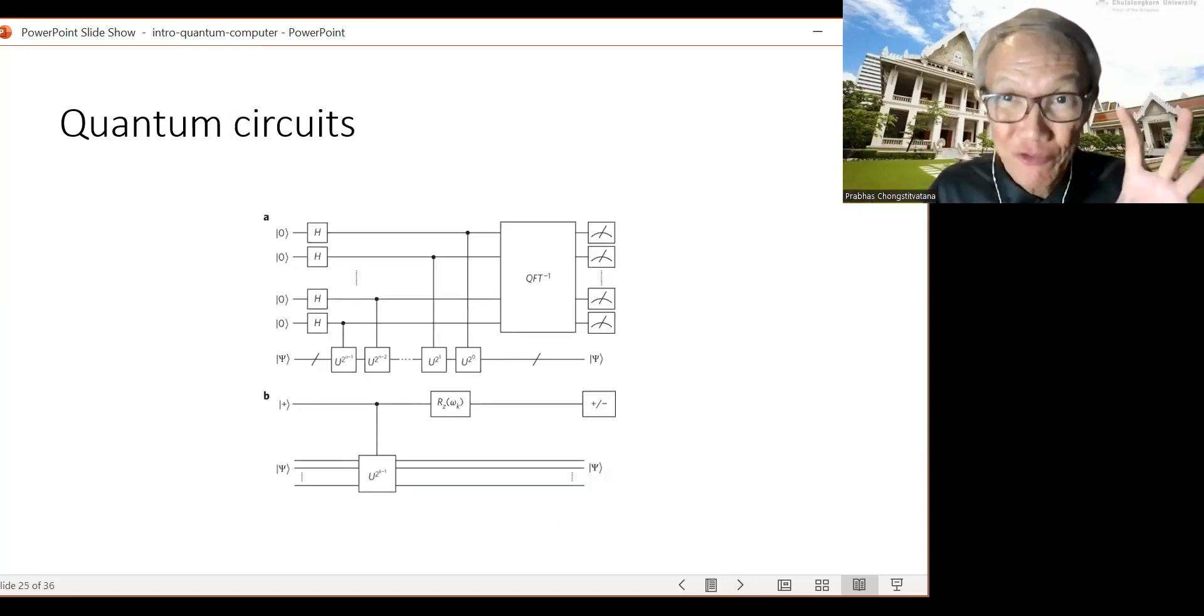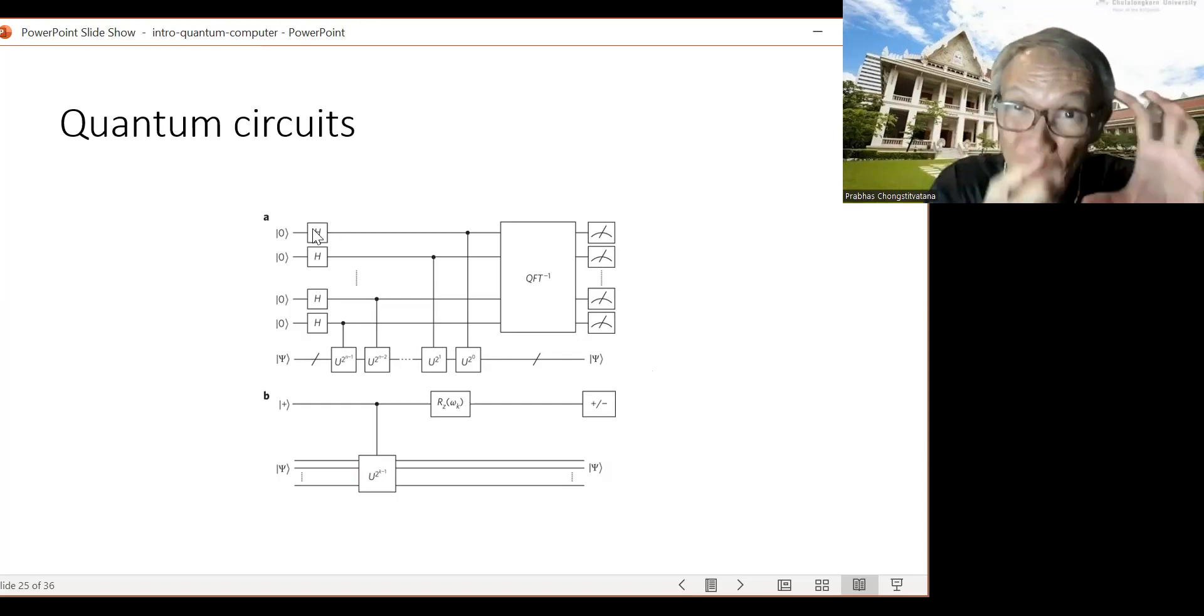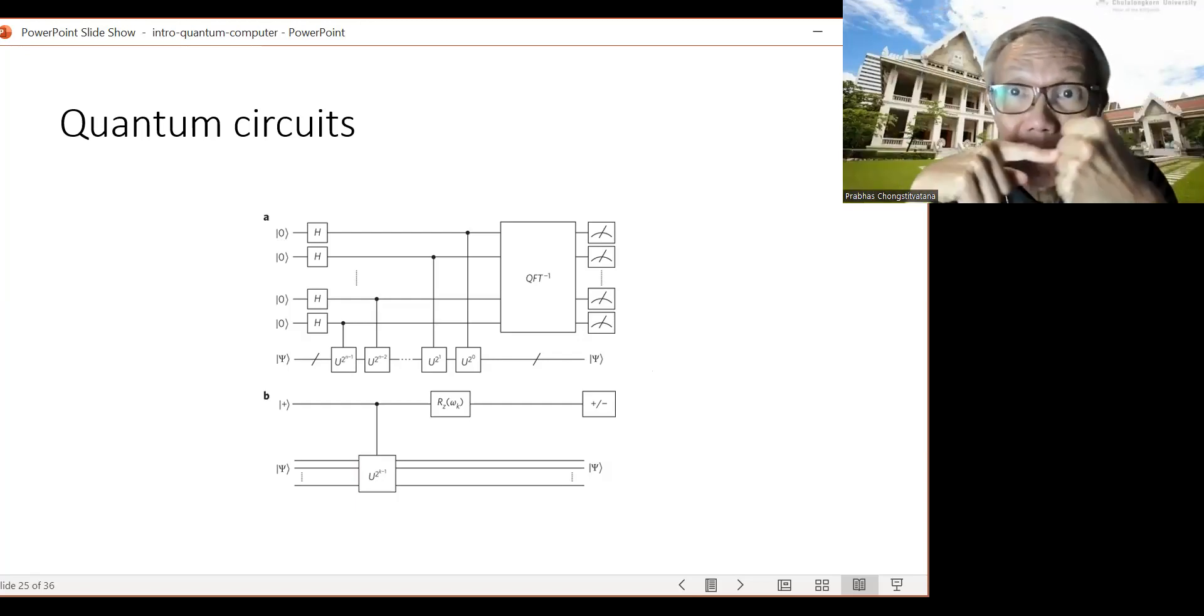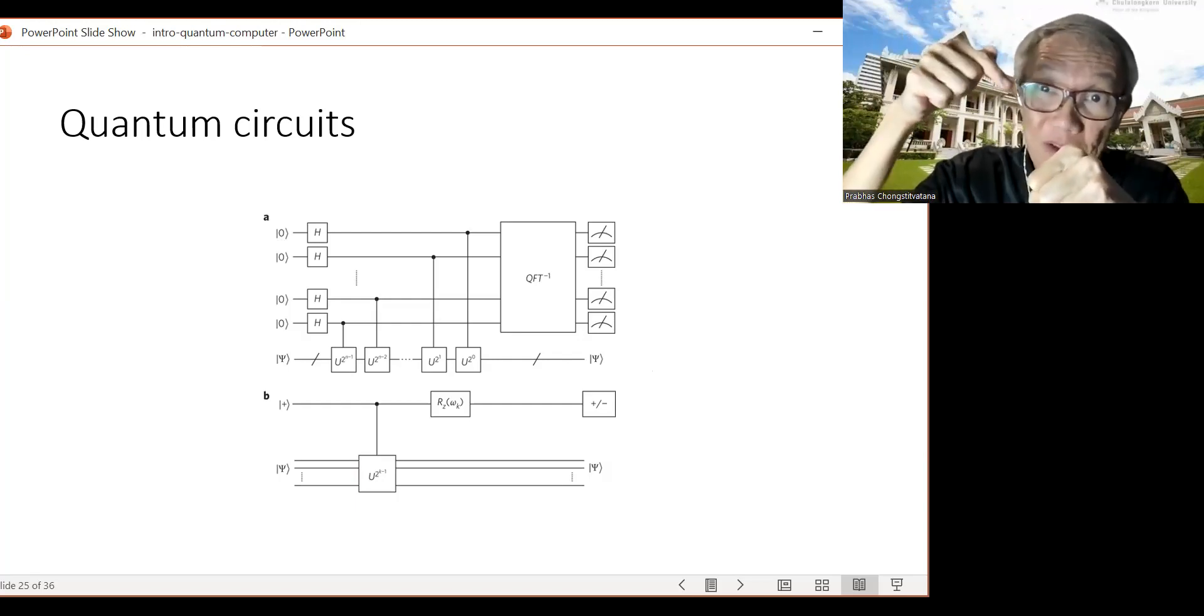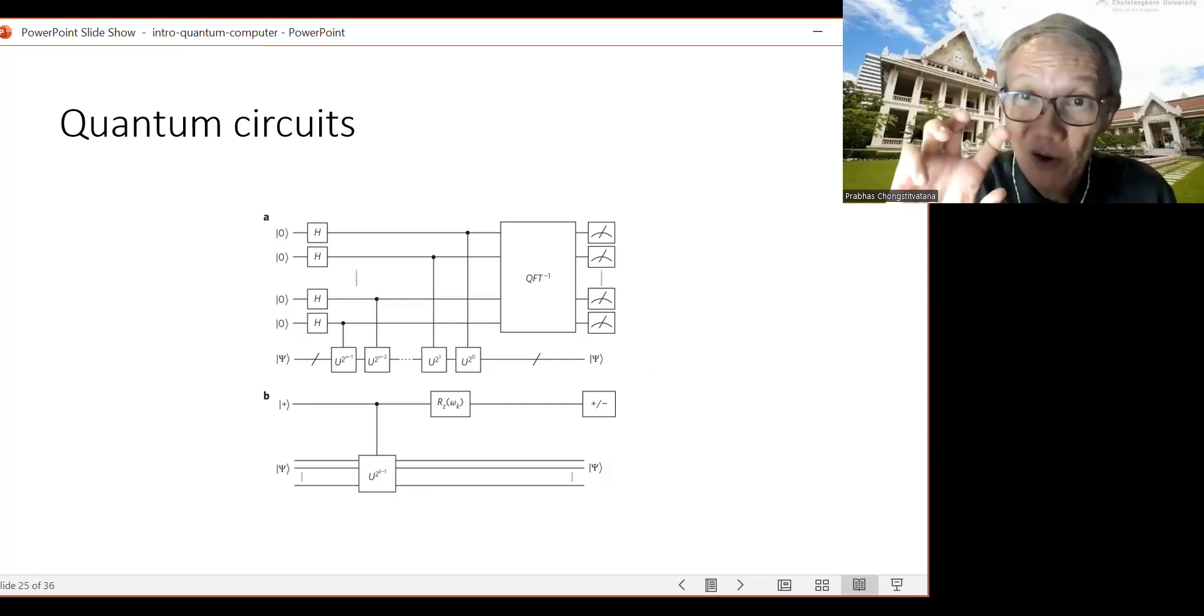So this is an example of the abstraction that we can represent a quantum program, a quantum computer. And it is the lowest level. The abstraction is that we have the quantum circuit. And if we compose them and the line, this line is a quantum state. So therefore it's a quantum bit hanging on each line. And then the square box is a kind of operation.